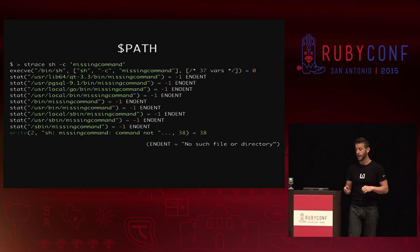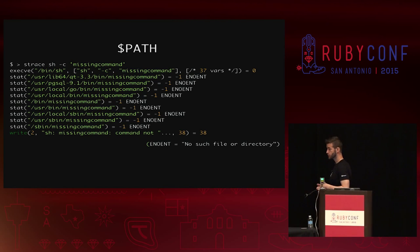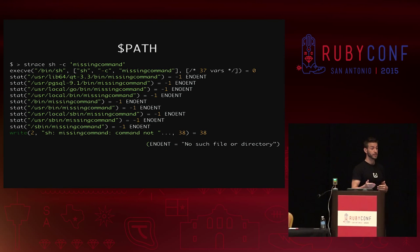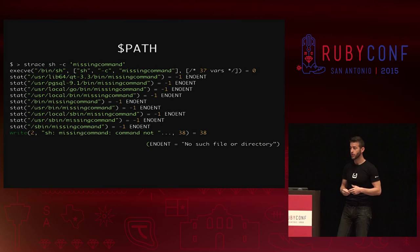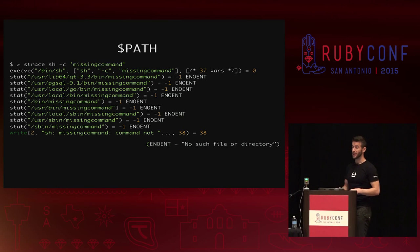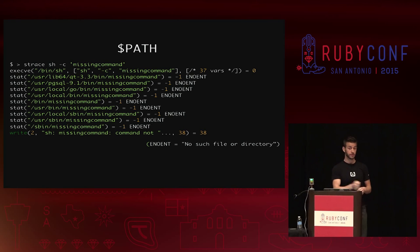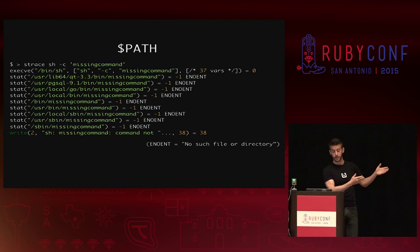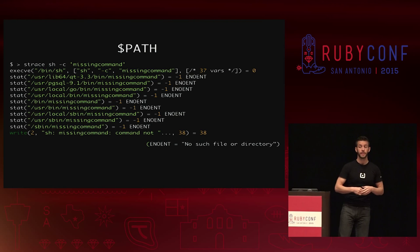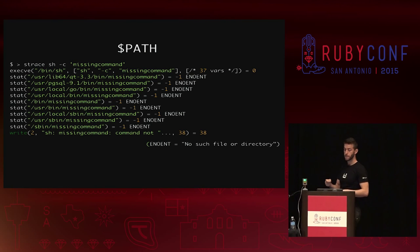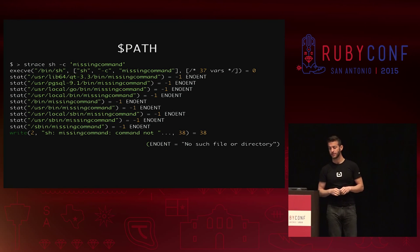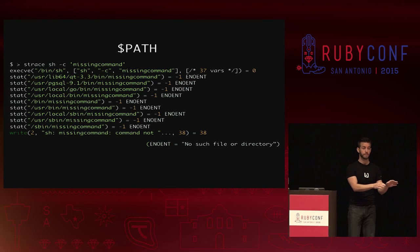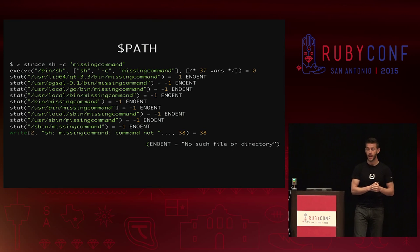I'm going to show you exactly how the computer uses PATH — it is not very sophisticated. Using strace on Linux (not available on Mac), I ran a simple shell command for a program that doesn't exist and showed all the system calls it makes. A program at any point is either doing math with its own memory or asking the kernel to do something — opening, writing, reading, getting the time of day. Strace shows me everything it asks the kernel to do.